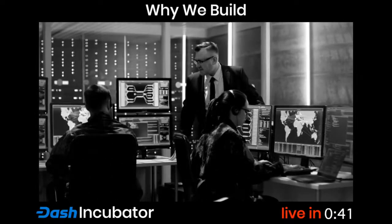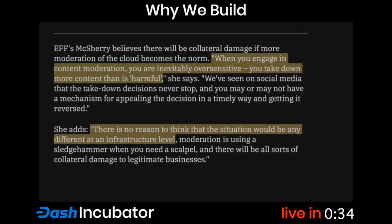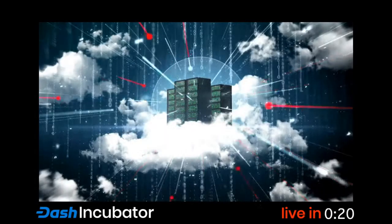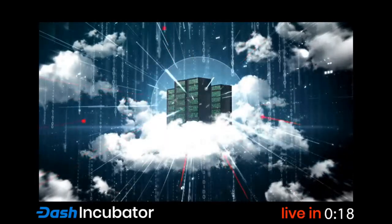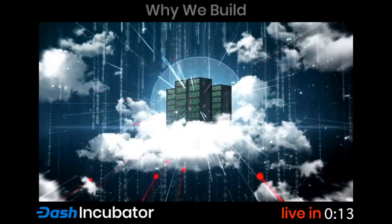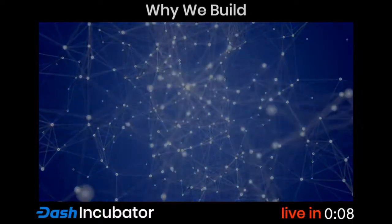These allegiances and censorship acts have spurred discussion, including this insight from Corynne McSherry of the Electronic Frontier Foundation: 'When you engage in content moderation, you are inevitably oversensitive — you take down more content than is harmful. There is no reason to think the situation would be any different at an infrastructure level.' Might there be a better option than relying on these censorship-prone centralized corporations — options that are not just uncensorable but possibly more robust and speedy? There may be: decentralized storage, which we'll delve into next week.